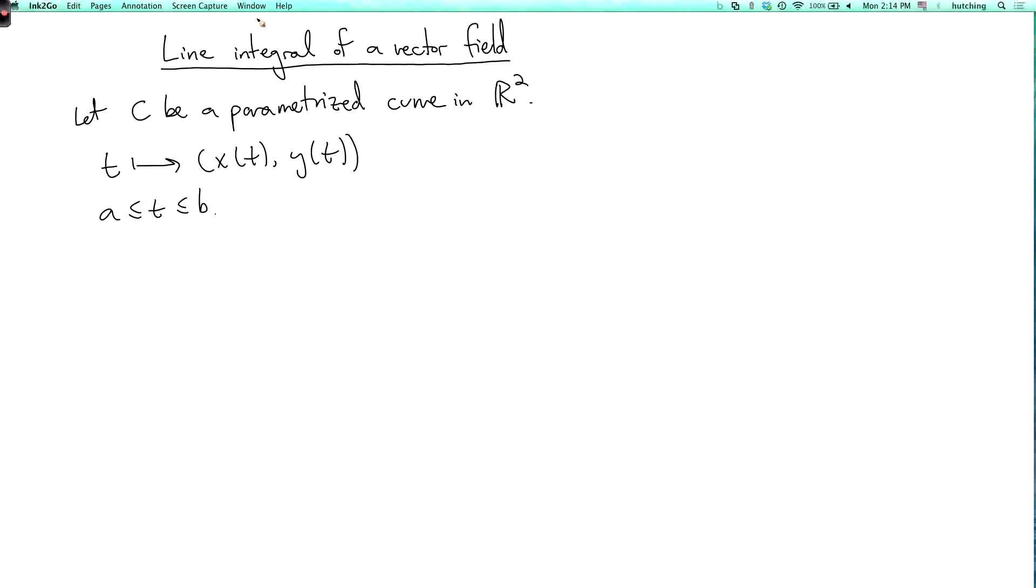Our third and last kind of line integral is the line integral of a vector field. As before, let C be a parametrized curve in the plane. So to each value of the parameter t, there is a point (x(t), y(t)) in the plane, and t goes from a to b.